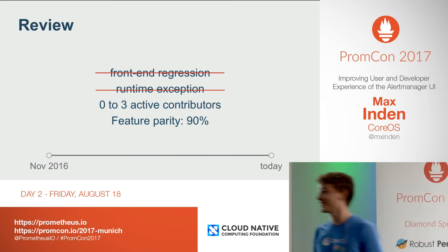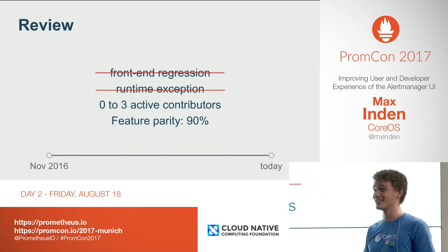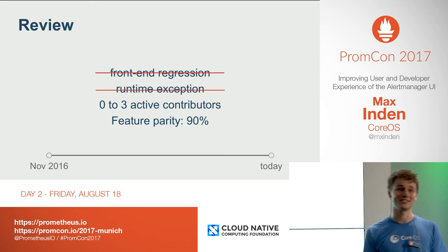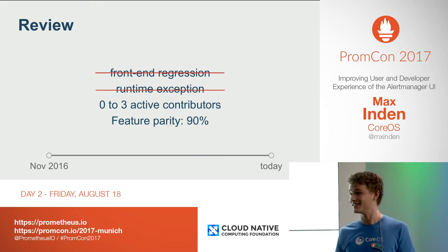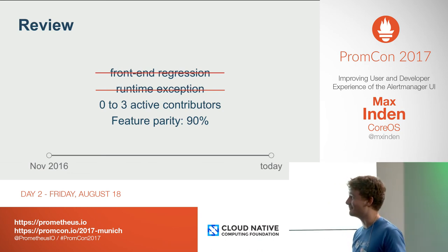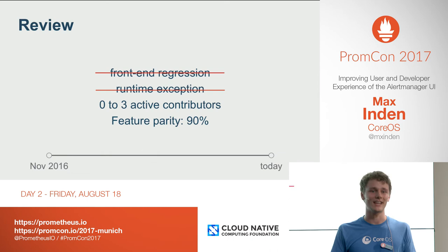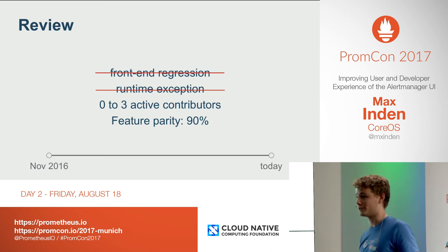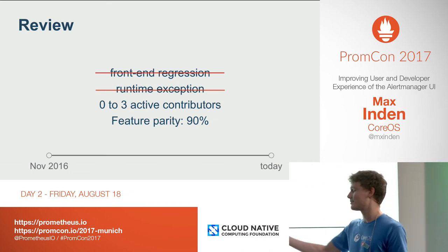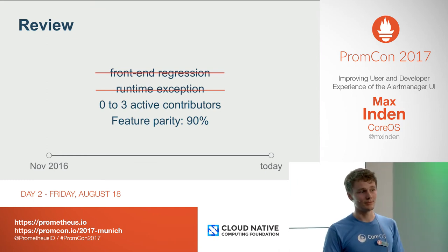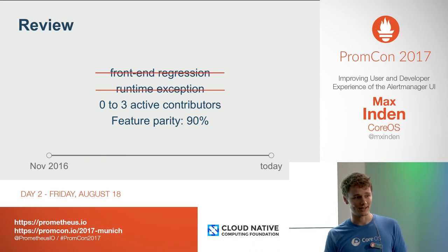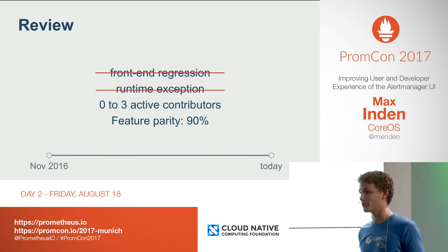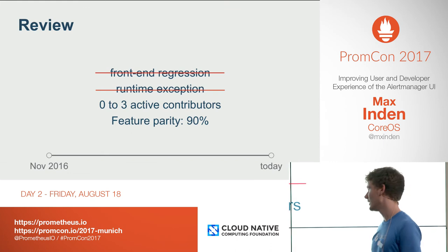Let's review this really quickly. We've had zero front-end regressions — let us know if we do, give us feedback please. We've had no runtime exceptions reported to us, ever. I've been working on quite a lot of JavaScript projects and this has never happened to me before. We actually have active contributors — maybe not daily, but pretty much every week or more frequently we have a new feature or we're improving the UI. And we are at 90% feature parity with the old UI — we're still missing the routing tree, which we absolutely want to get back in. But we have a lot more than the old UI in terms of filtering, searching, and improved usability.